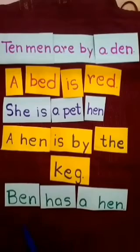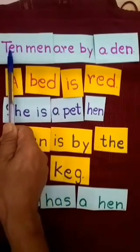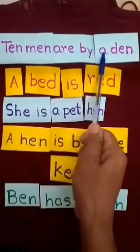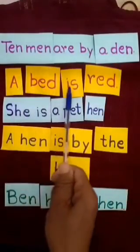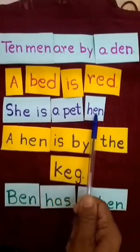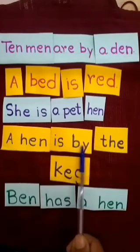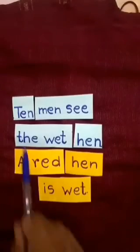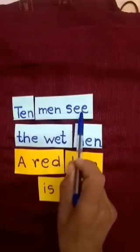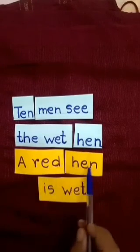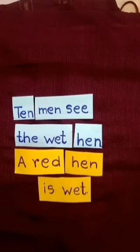Children, let us read these sentences. Say after me: Ten men are by a den. A bed is red. She is a pet hen. A hen is by the keg. Ben has a hen. Ten men see the wet hen. A red hen is wet. Very good.